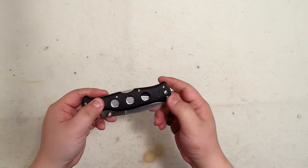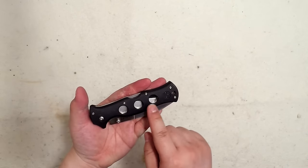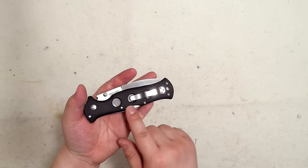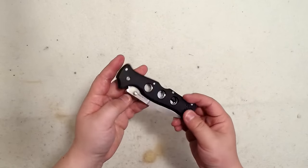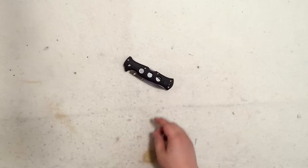There's a pocket clip you can put on the other side if you like, and there are some cutouts right here on the frame which is the G10 handle. It's supposed to reduce the weight of the knife.